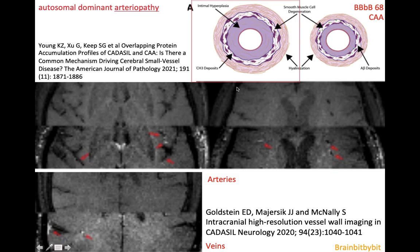On imaging — these are 7-Tesla images — pre- and post-contrast T1 with enhancement of the vessel wall of the leptomeningeal arteries, the pial arteries, the subcortical arteries, and even involvement of the veins.